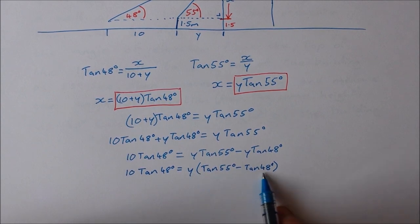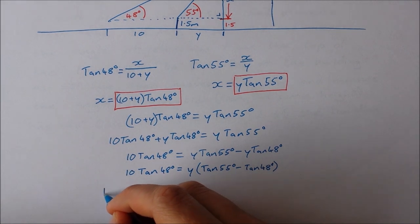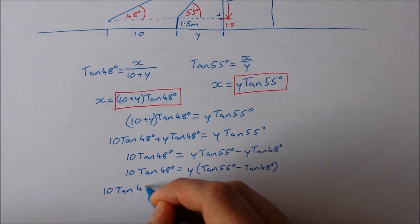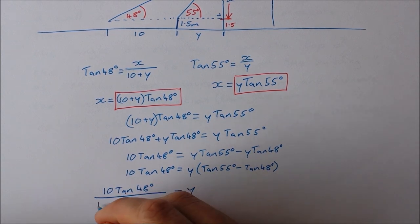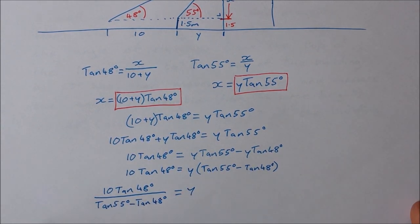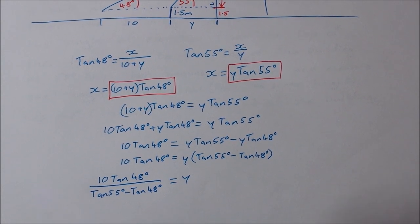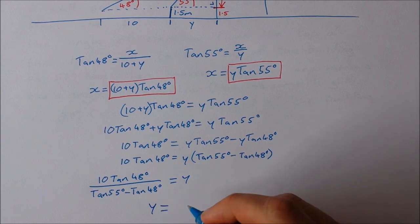Okay, I have a single y multiplied by this here. So I can divide both sides by that to get y is equal to 10 tan 48 divided by tan 55 minus tan 48. So if I type all that into my calculator, I find out that y is equal to 34.97 meters.